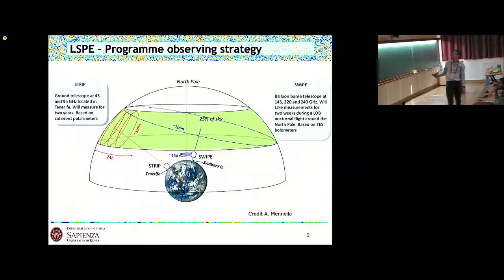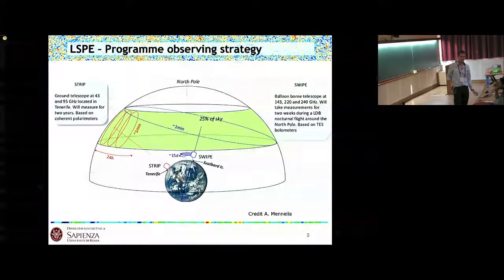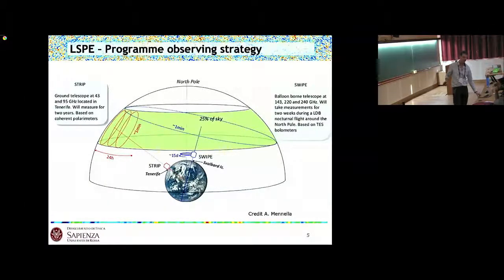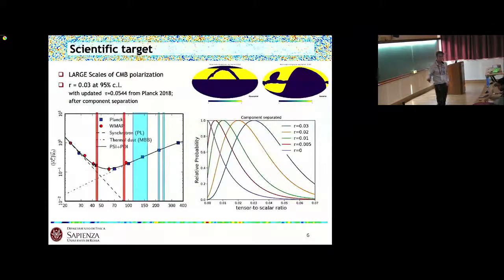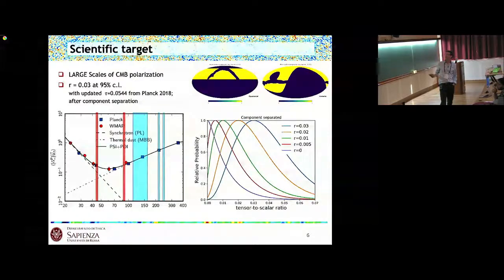The strip telescope works at 43 and 95 gigahertz to control the foregrounds in synchrotron emission in polarization. SWIPE is a balloon with frequencies at 140 and 220 gigahertz. The angular resolution is one degree, the field of view is wide, about 10 degrees.